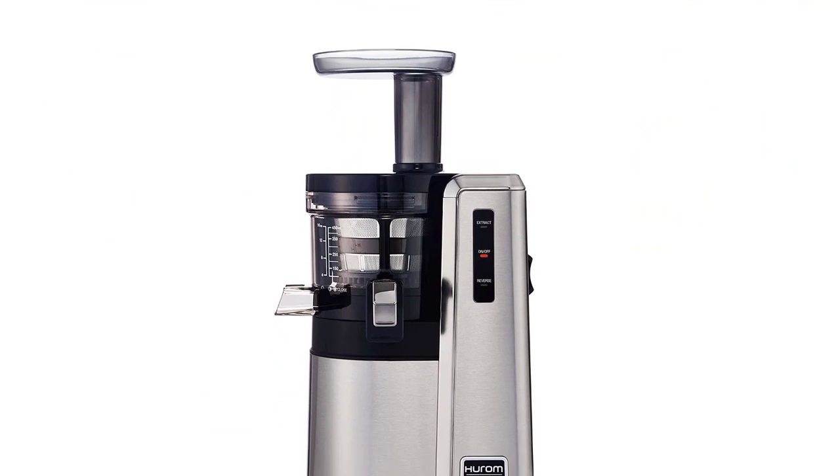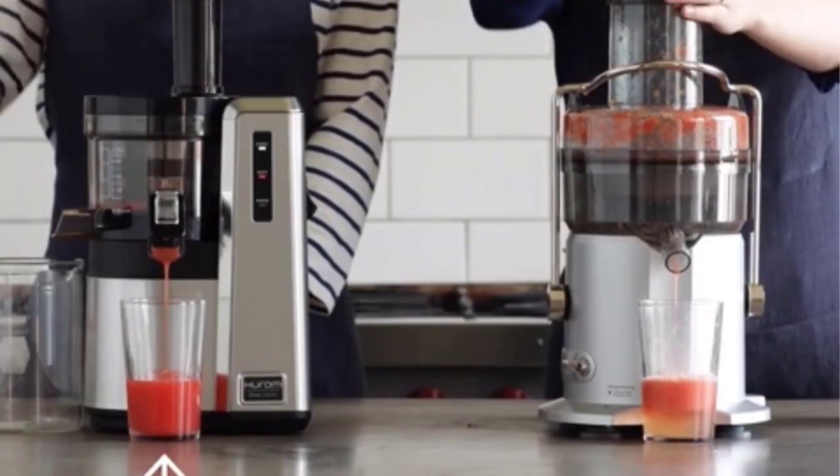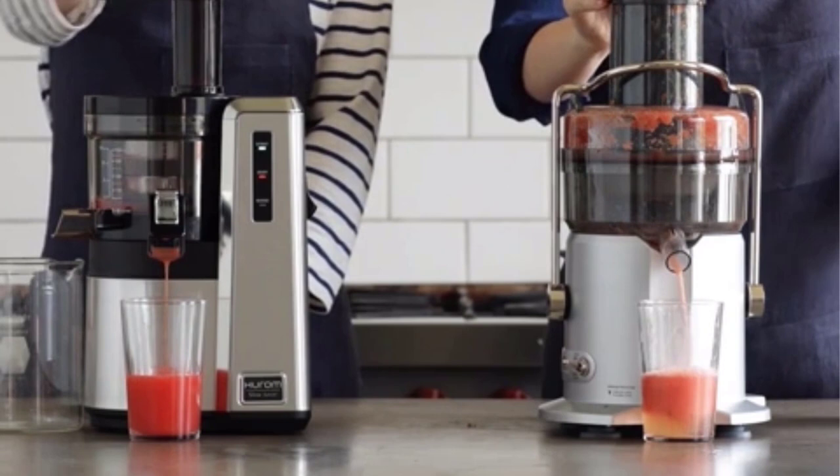The Hurom HZ has a high efficiency of extraction, which means you get more juice out of the same amount of produce than other juicers. It also maintains natural flavor, so your juice will taste delicious.